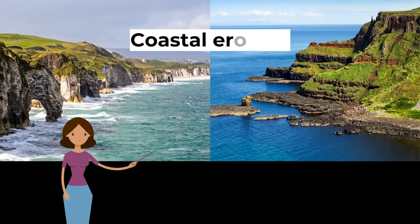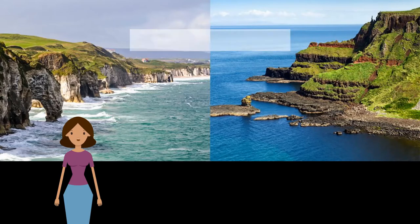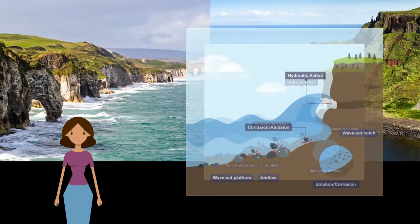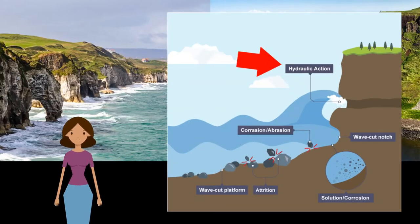Now let's look at coastal erosion. The sea shapes the coastal landscape — coastal erosion is the wearing away and breaking up of rock along the coast. Destructive waves erode the coastline in a number of ways. Firstly, hydraulic action: air may become trapped in joints and cracks on a cliff face. When a wave breaks, the trapped air is compressed, which weakens the cliff and causes erosion.